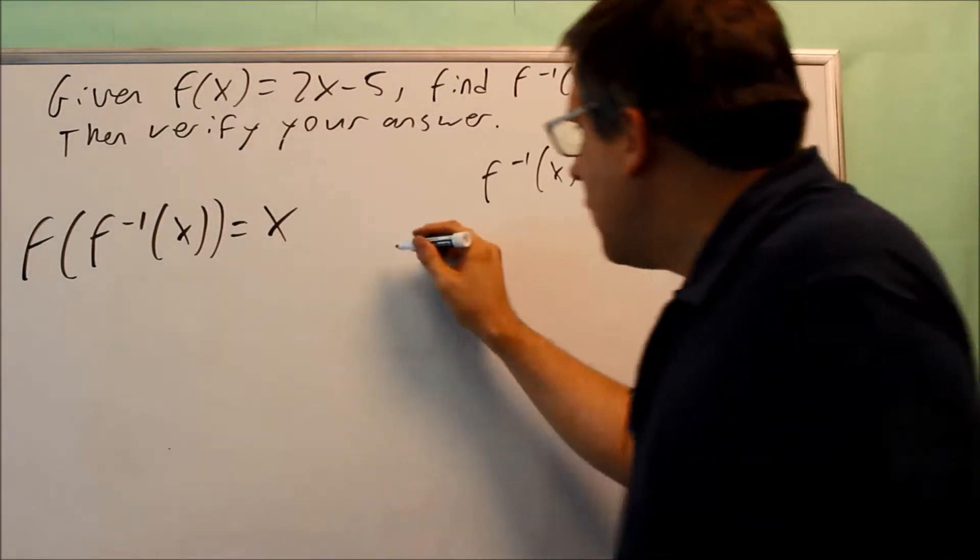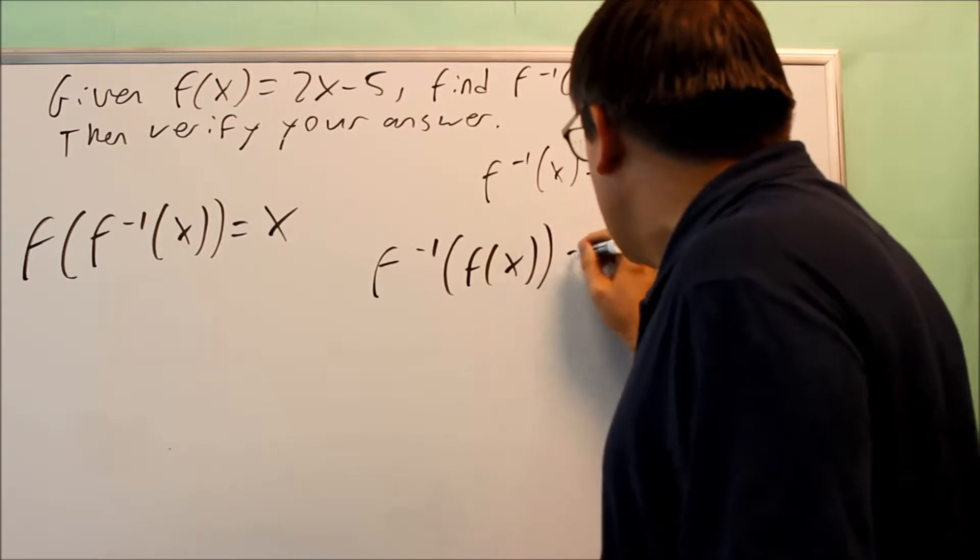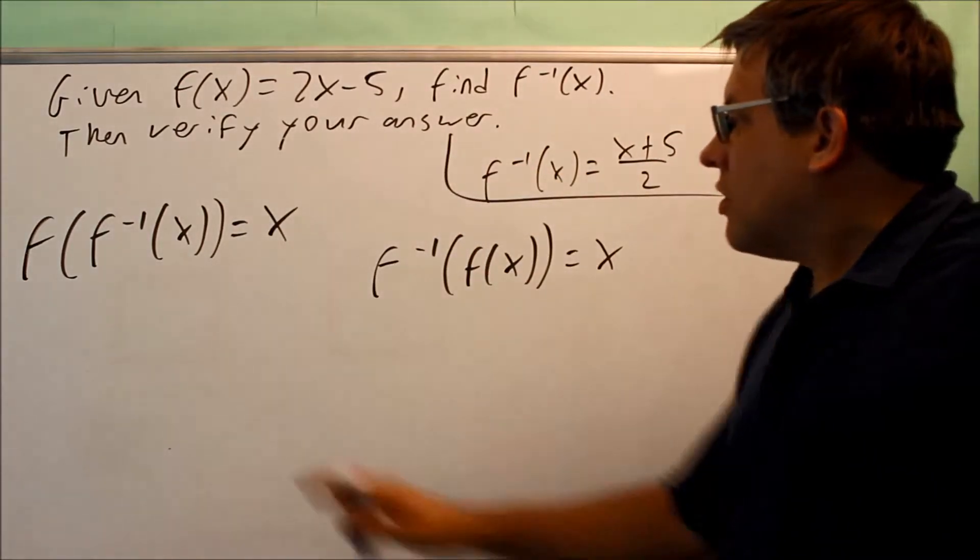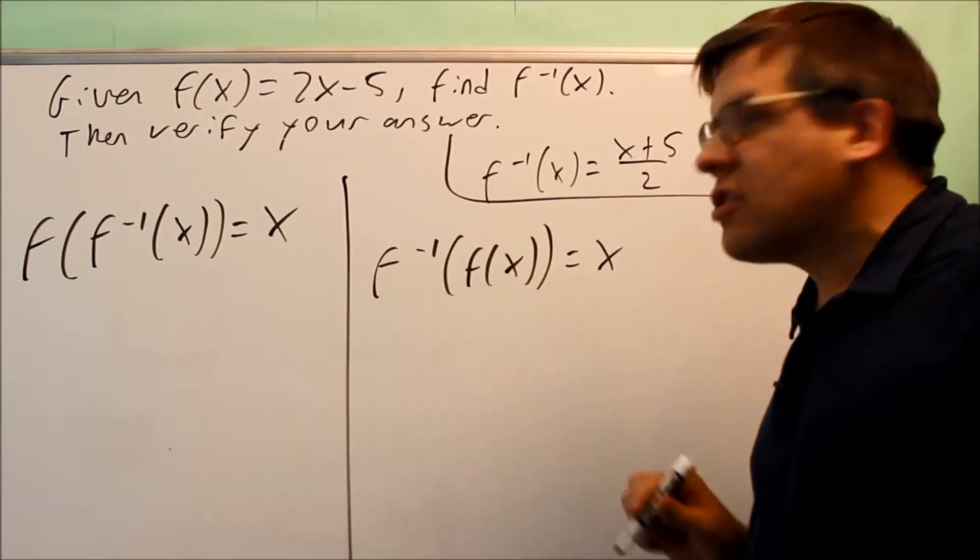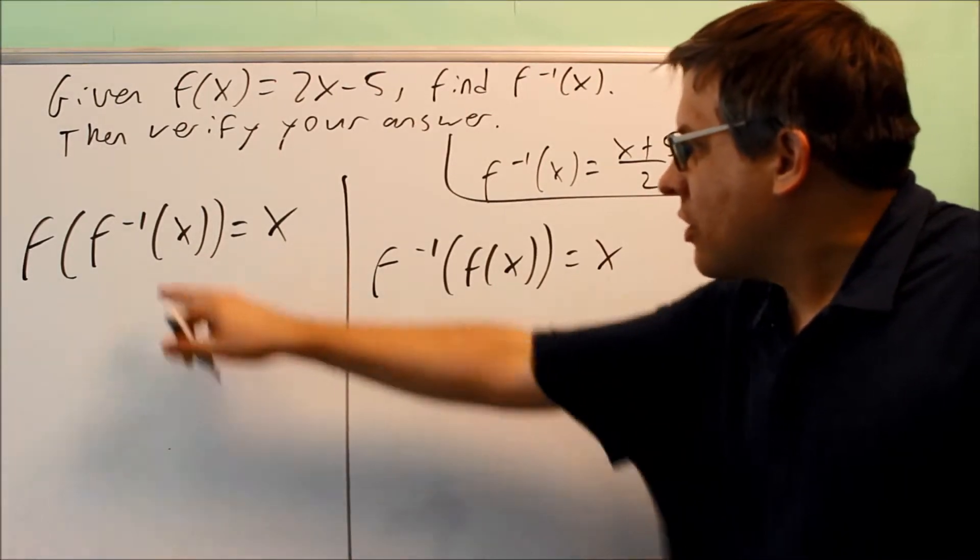show that's equal to x, and then I have to do the same thing except I'm putting the inverse on the outside. So now I have these two that I have to do, and if I can show both sides are equal to x, then I verify that these are, in fact, inverses. Let's do this one first.